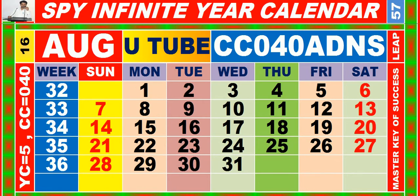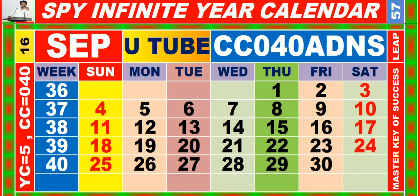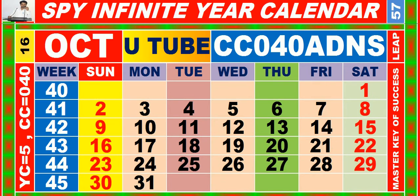Calendar for the month of August having calendar code equal to 0 for 0. Calendar for the month of September having calendar code equal to 0 for 0. Calendar for the month of October having calendar code equal to 0 for 0.